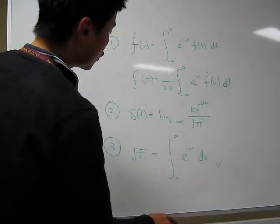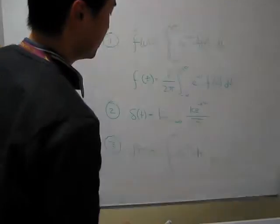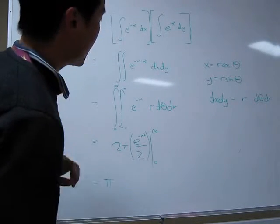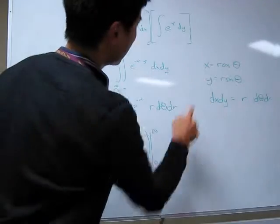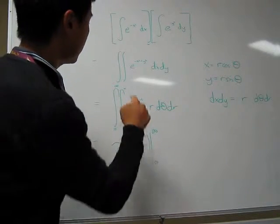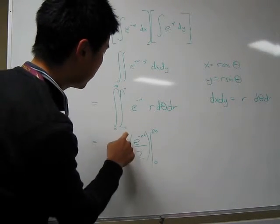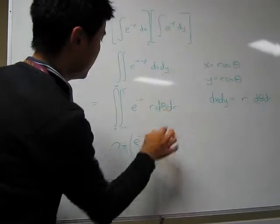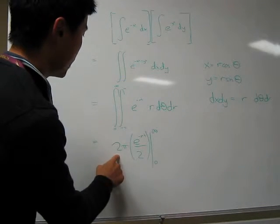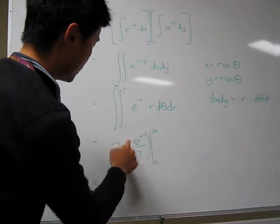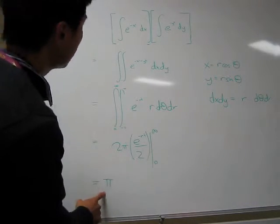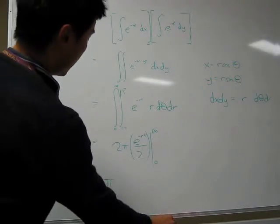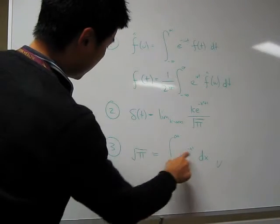Let's get the Gaussian integral out of the way first. What on earth does this integral actually equal? Well, I can tell you what the square of it equals — it just becomes a double integral, and we can perform a change of coordinates. To let x and y range from negative to positive infinity, we let theta range from negative pi to positive pi, and r go from 0 to infinity. The integration over theta is trivial — it gives a factor of 2π. The integration over r is also trivial, because this is the antiderivative — it gives a factor of one half. So the square of this integral is equal to π, and therefore the integral itself is equal to the square root of π.